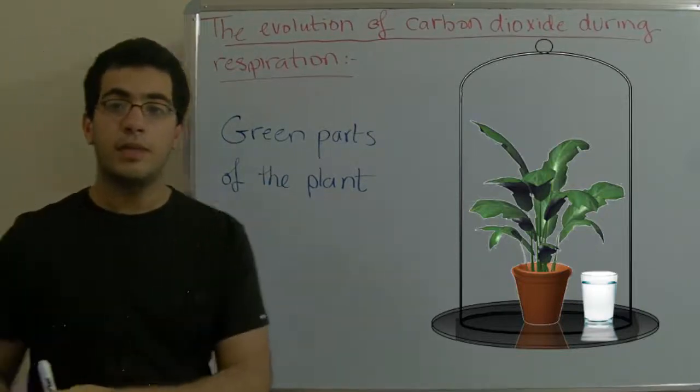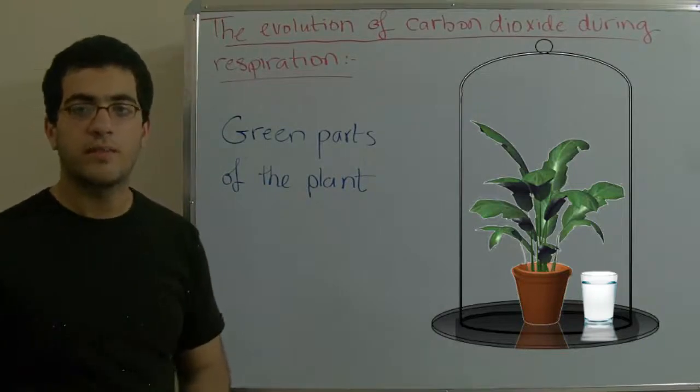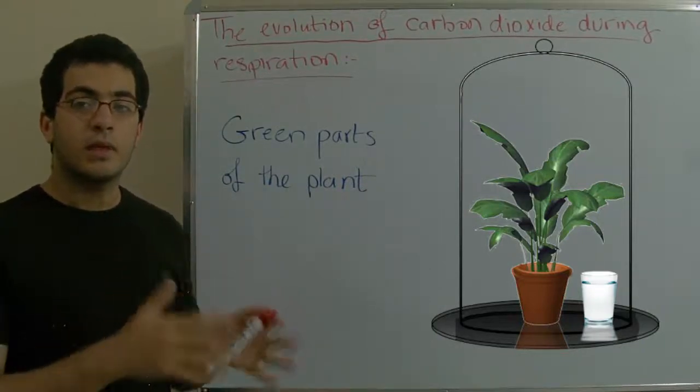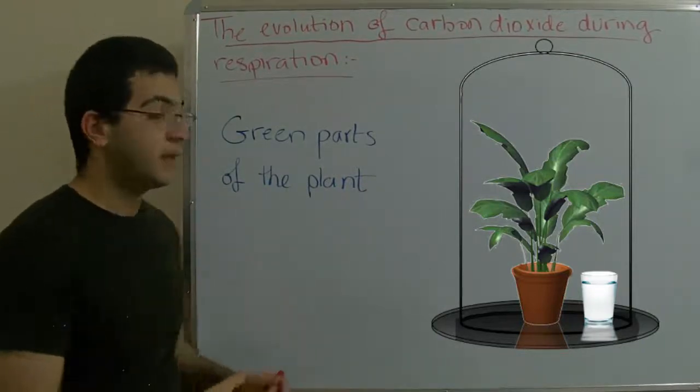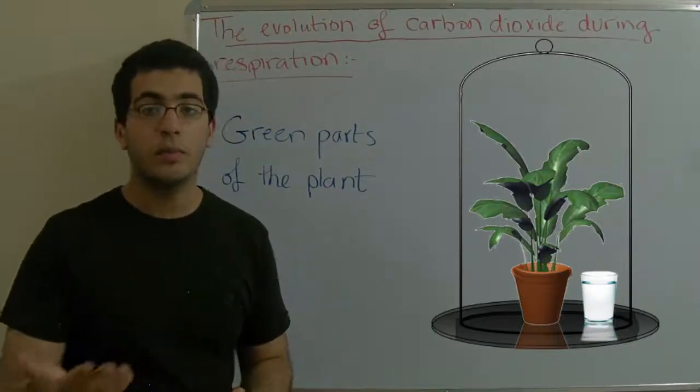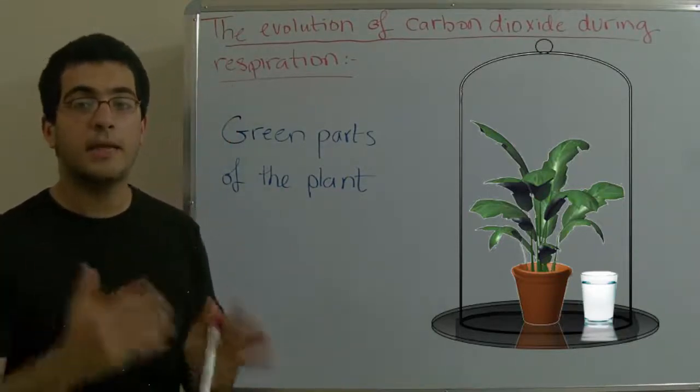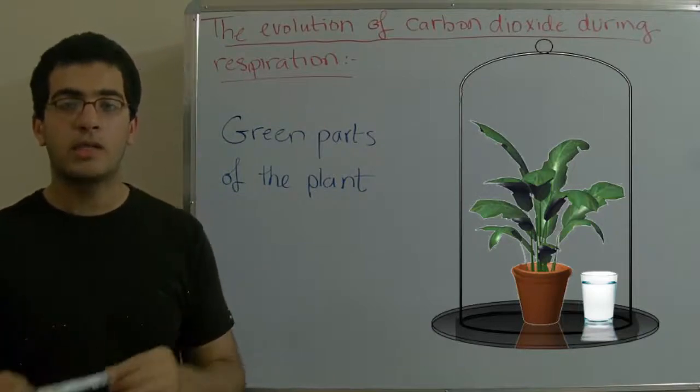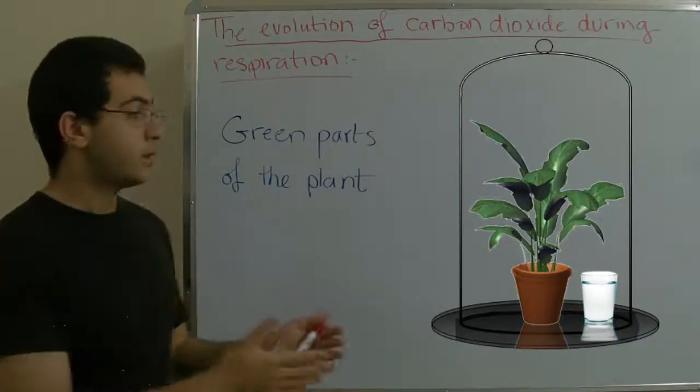Because if sunlight reaches the plant, it will carry out the photosynthesis process, and accordingly the photosynthesis process will consume the produced carbon dioxide, and its effect will not appear on the lime water. So we put the black cloth for this purpose.